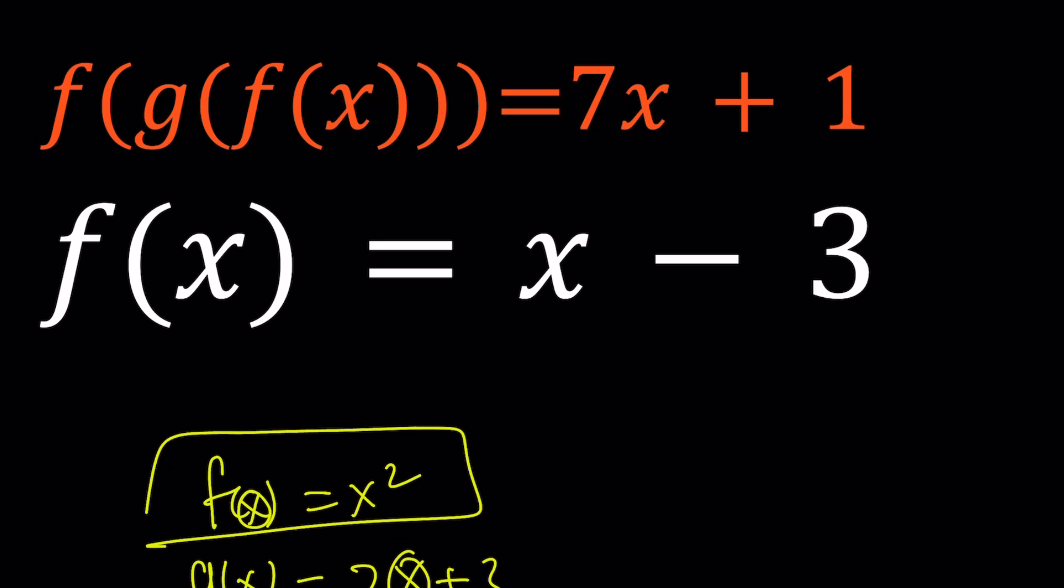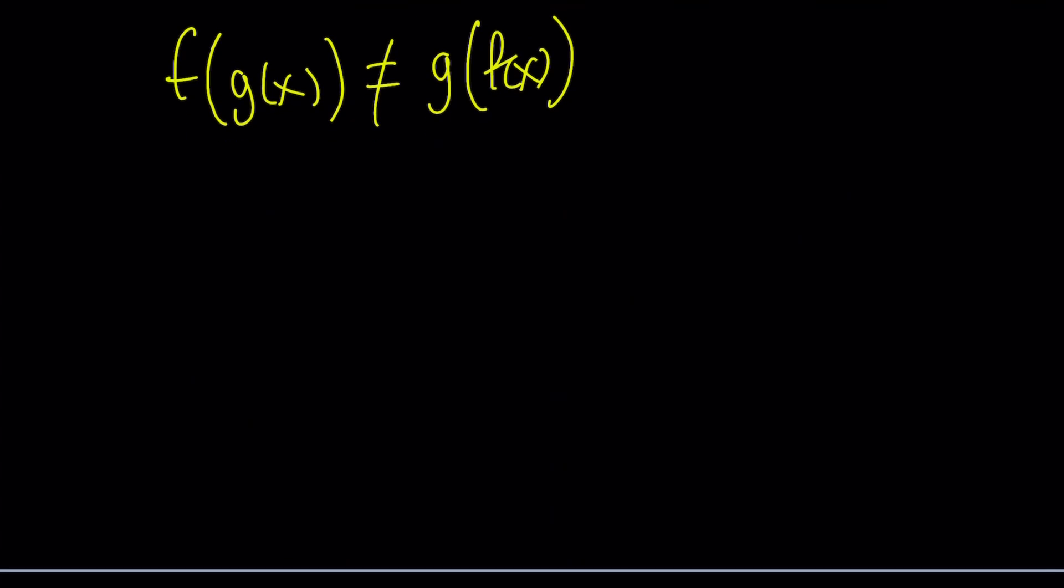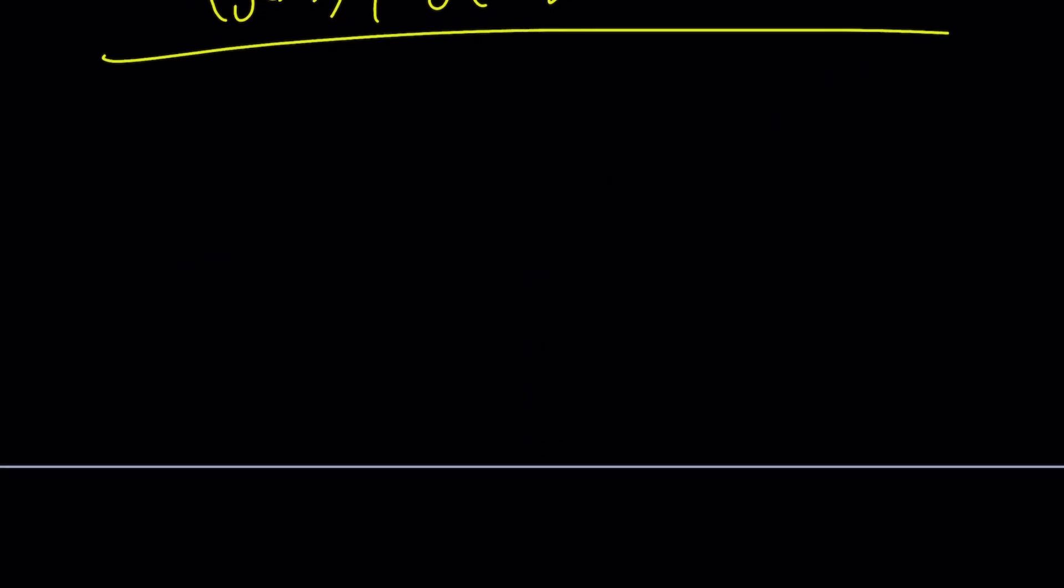And now let's go ahead and proceed with our problem. So what is f of g of f of x means? It just means that replace the x in f of x with g of f of x, and g of f of x is replace the x in g of x with f of x, so on and so on. Anyways, let's just start with this first. Obviously, to simplify things, we're going to start with this. We don't have to, by the way. You could also look at the whole thing. Maybe I can show you both approaches. So anyways, let's go ahead and rewrite our equations. We have f of g of f of x equals 7x plus 1, and f of x equals x minus 3.